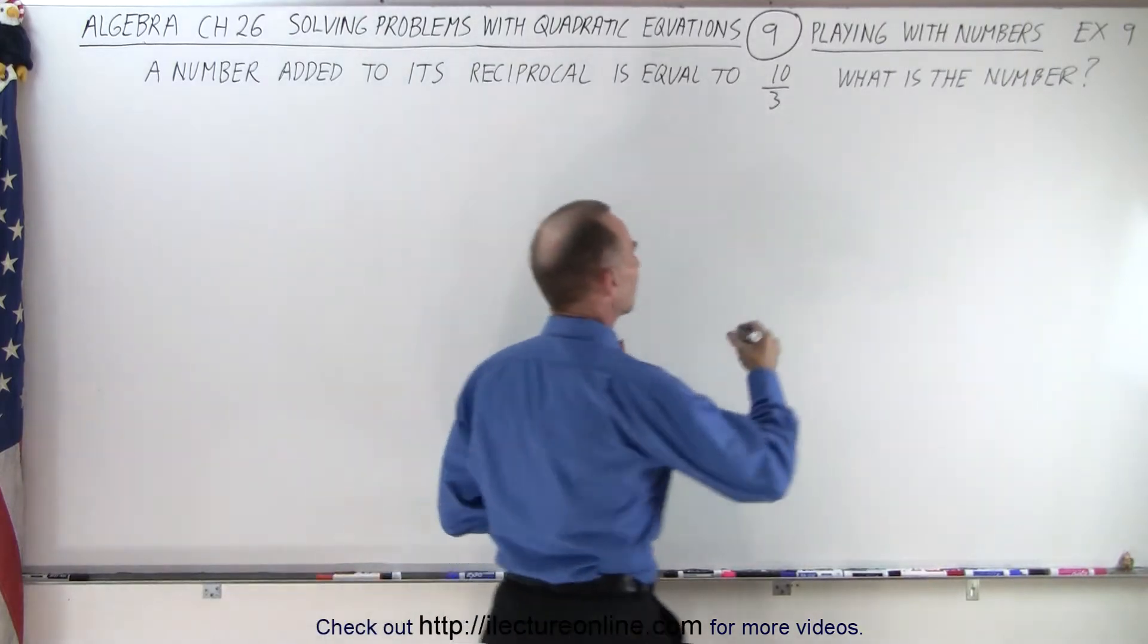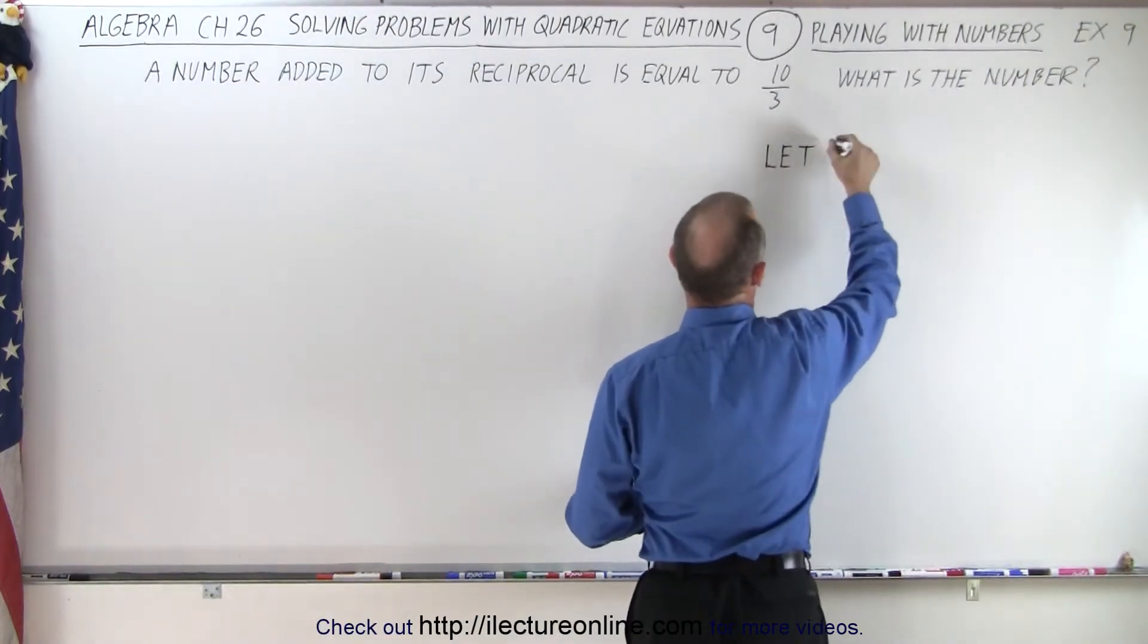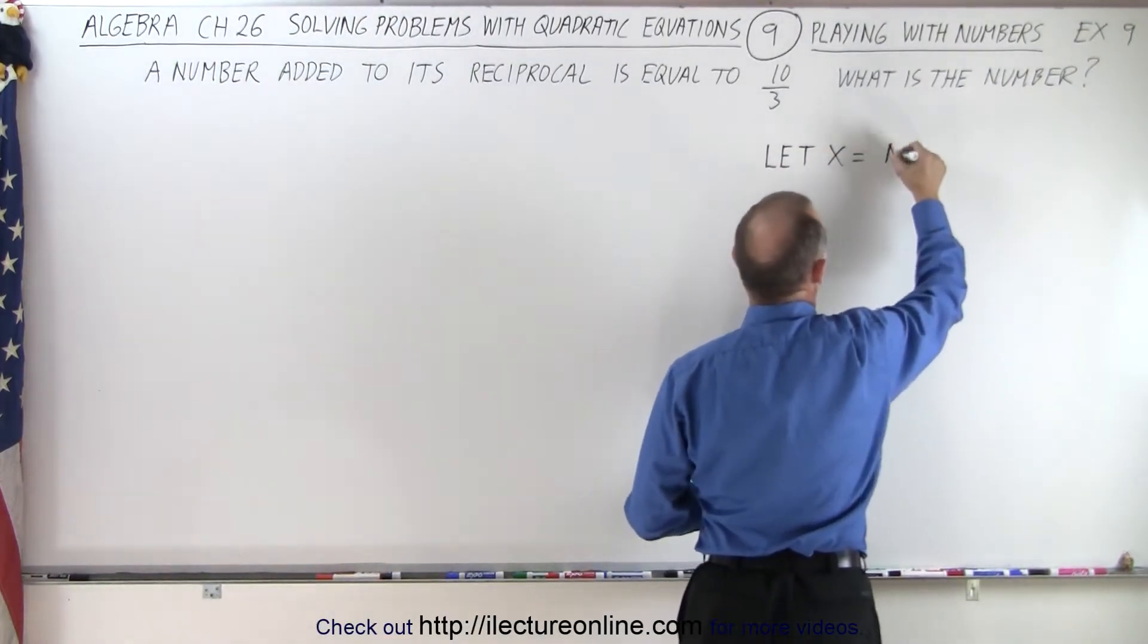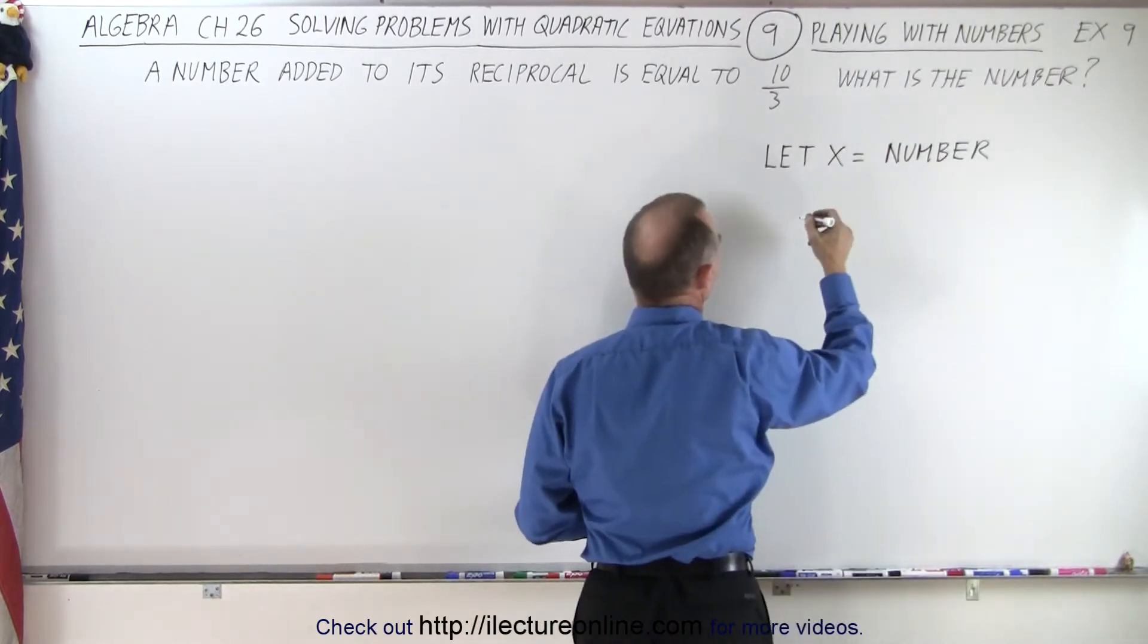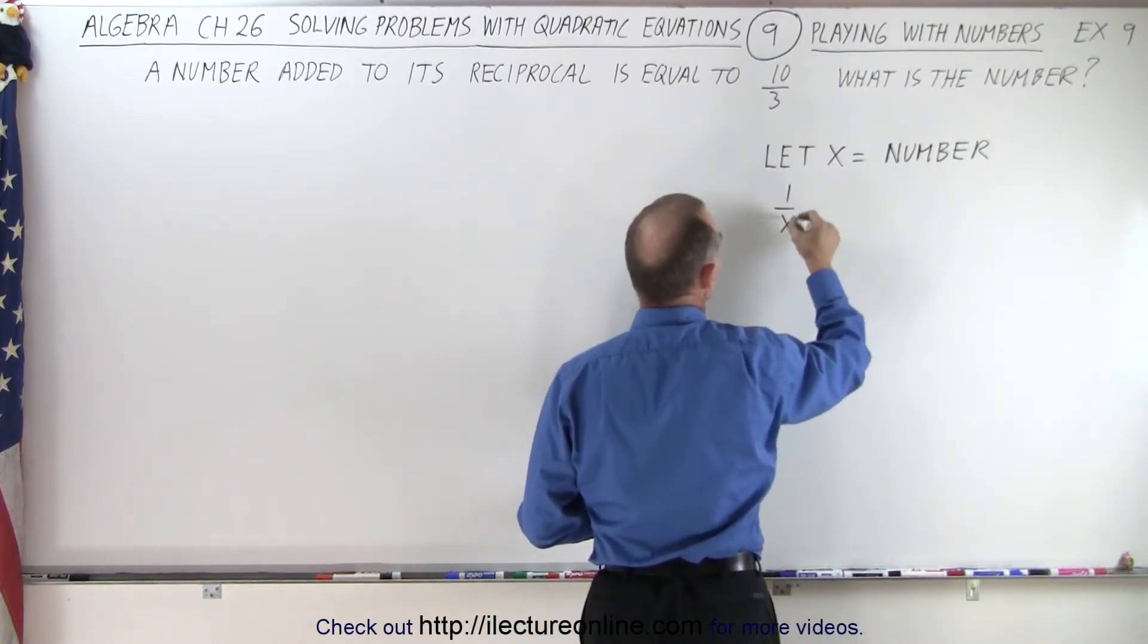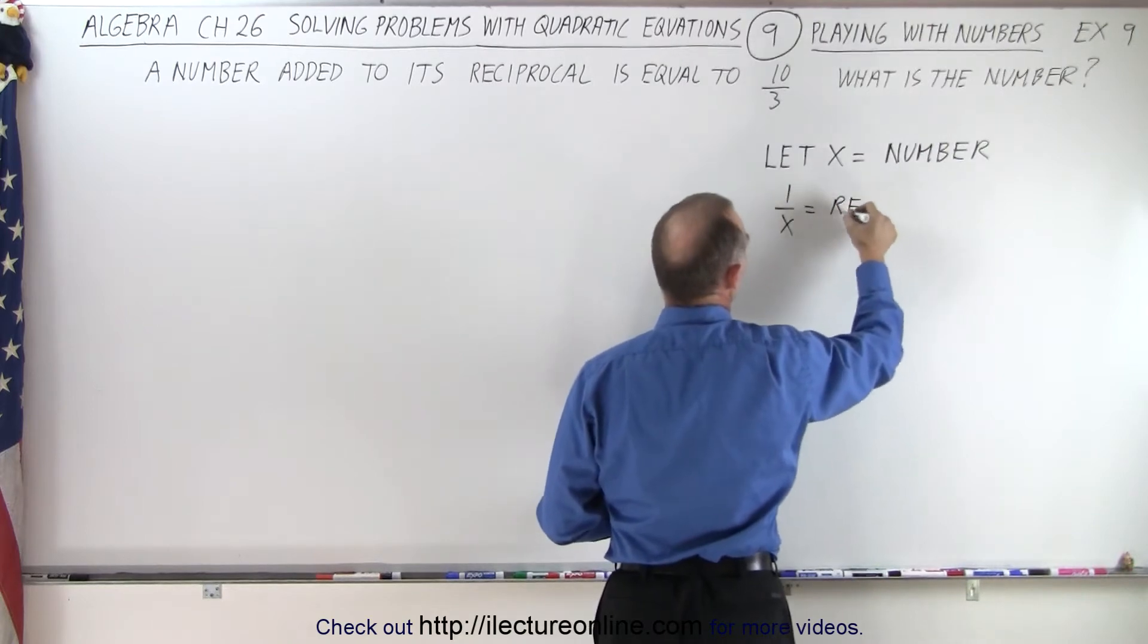So we're going to define the number as x. Let x equal the unknown number. Then the reciprocal, of course, will be 1 over x. So 1 over x equals the reciprocal of that number.